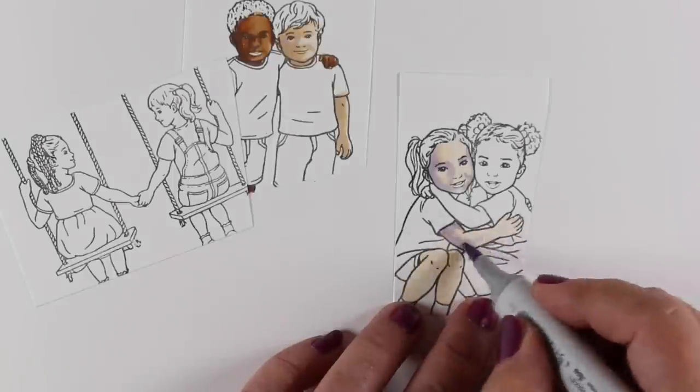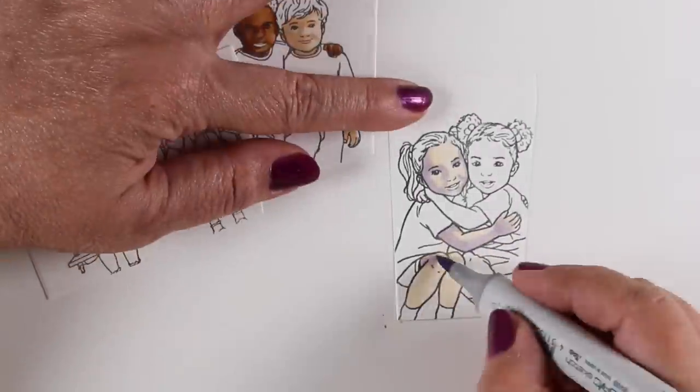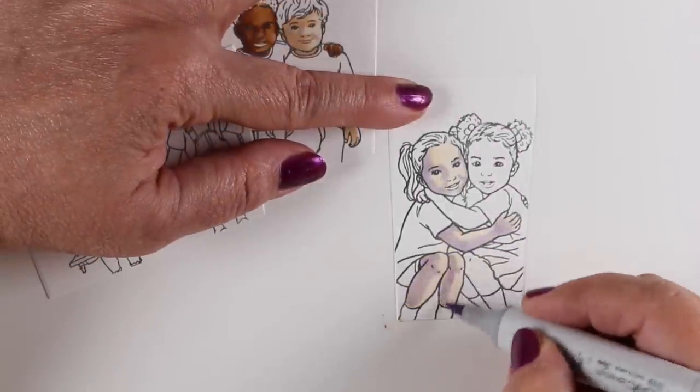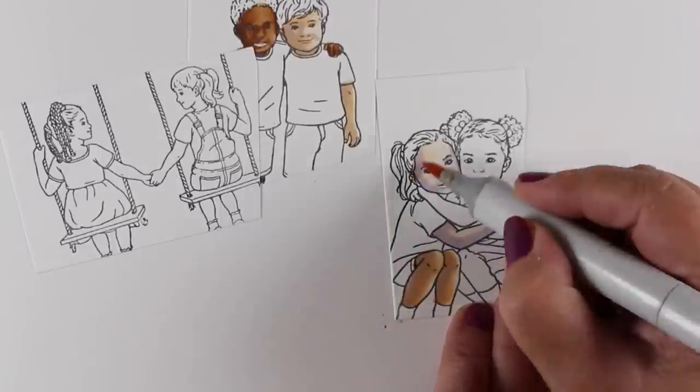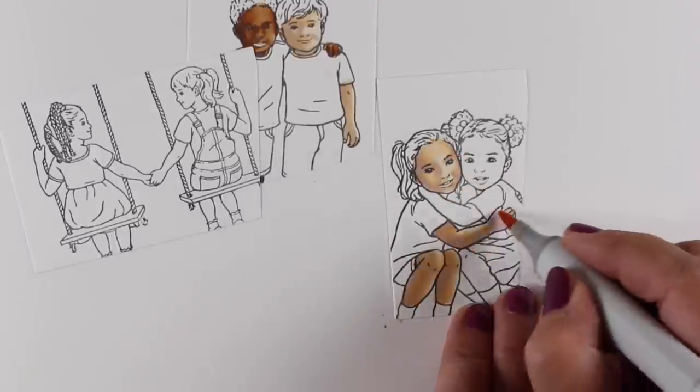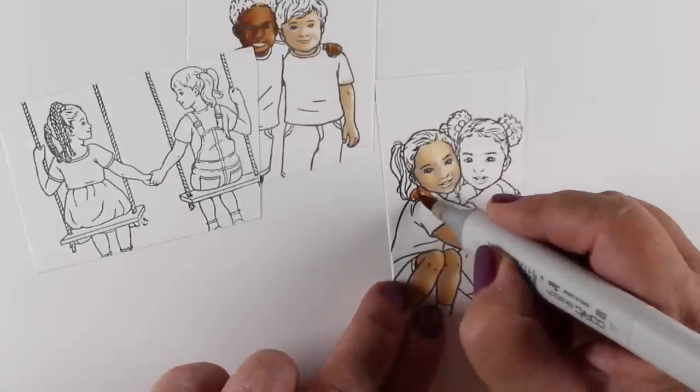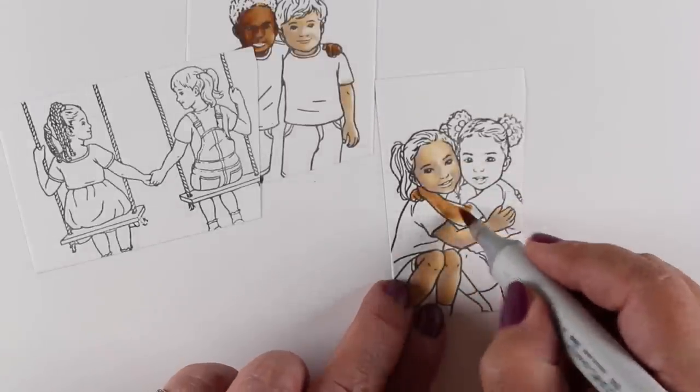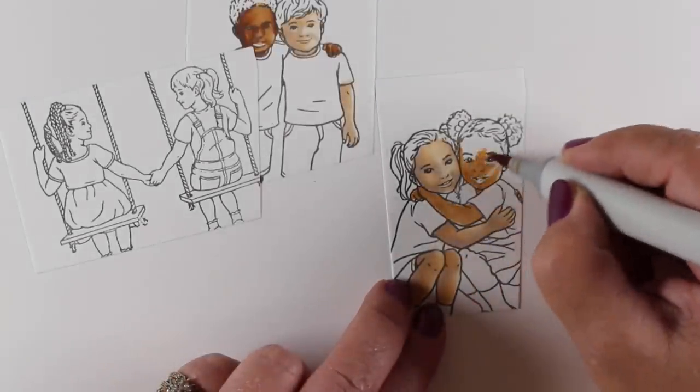These little girls have larger faces, so they're a little easier to color. They've got a little more room to get the Copic markers in there. One thing that I find a lot of people struggle with is they try to make the shadows all the way around the outside of the entire faces when they're coloring people.